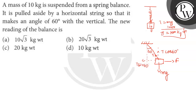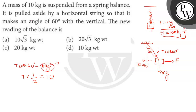Now, the question is asking us that T cos 60 should be equal to mg. When T cos 60 is equal to mg, then the system is balanced and the value of T is the reading of the spring balance. So T into cos 60 — cos 60 is 1/2 — is equal to mass, which is 10. So here mg equals mass times g, which gives us 10.